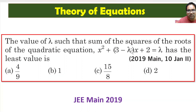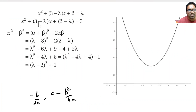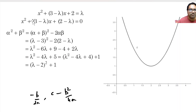Let us bring this λ to the left side and make this a complete quadratic equation. This becomes x squared plus (3 minus λ) times x plus 2 minus λ equals 0. This is in the form of ax squared plus bx plus c, where a is 1, b is (3 minus λ), and c is (2 minus λ).